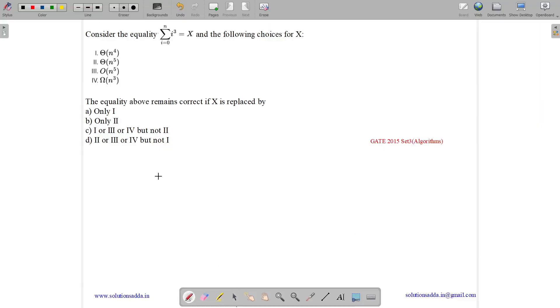This question belongs to algorithm subject and was asked in GATE CSE 2015 set 3. The question states: consider the equality for the range i equals 0 till n, where the sum of i cube equals x. And the following choices are for x, given in asymptotic notation.